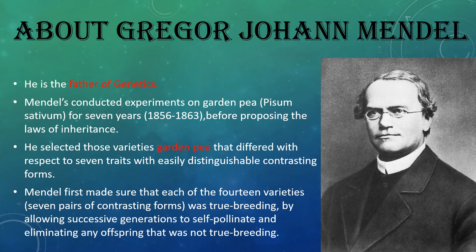He selected the garden pea especially because it had different and contrasting forms of traits. Before doing the experiments, he made sure that the traits he selected were pure, so that the results could be found out correctly.